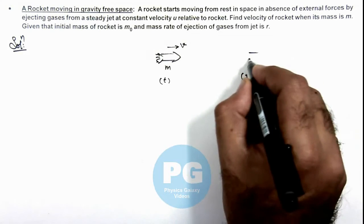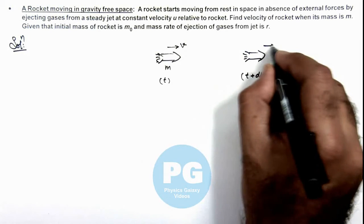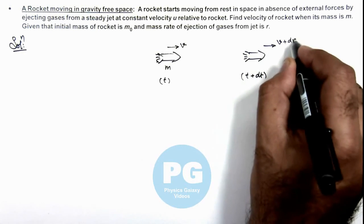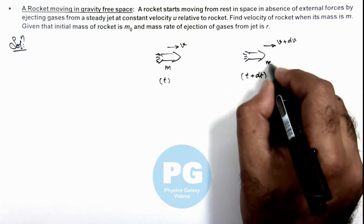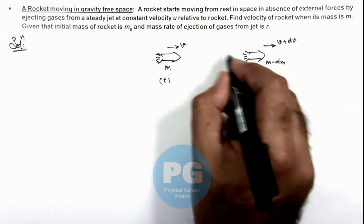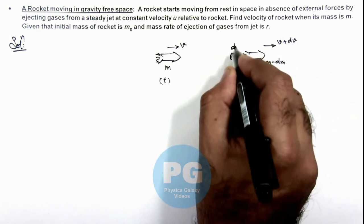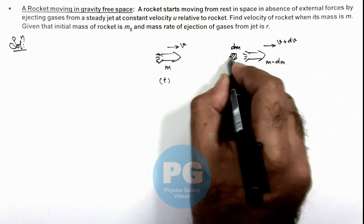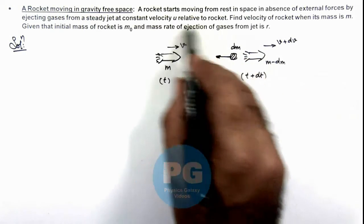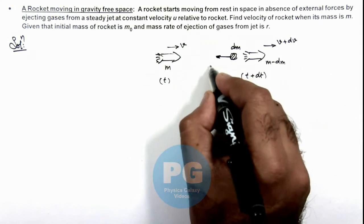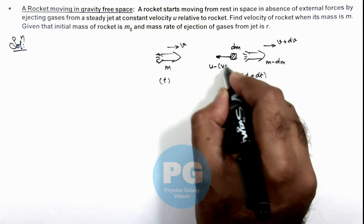When the rocket would be moving with the velocity v plus dv, its mass reduces to m minus dm, and the mass dm of gases which eject out will be at a speed u relative to rocket so their speed would be u minus v plus dv.